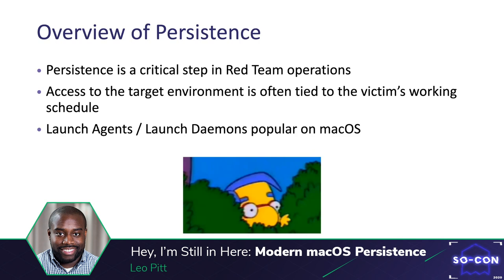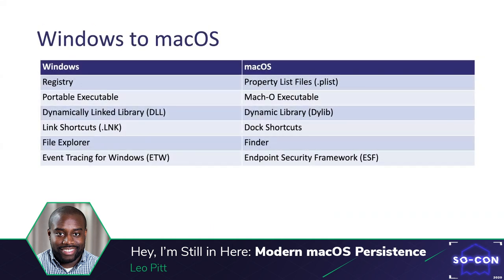So my goal with this talk is to highlight some of the lesser-known methods for persistence on macOS. Here's a chart with some Windows terms and their macOS equivalents. Starting from the top: on Windows we have the registry, that hierarchical tree format that dictates how the OS runs. On macOS we don't have a centralized method — instead we have a decentralized one through property lists, or plists, which dictate how the OS and various applications run. You'll find them in different preference folders and under application bundles, essentially all over the system.